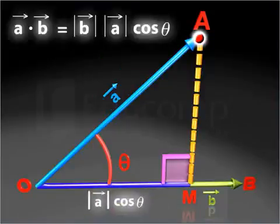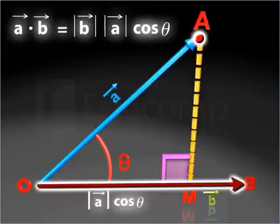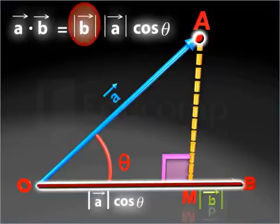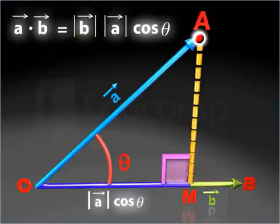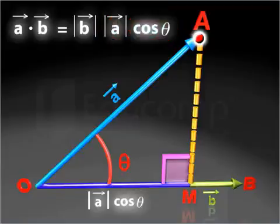Thus, the scalar product of vectors A and B is the product of the magnitude of vector B and the scalar component of vector A along vector B.